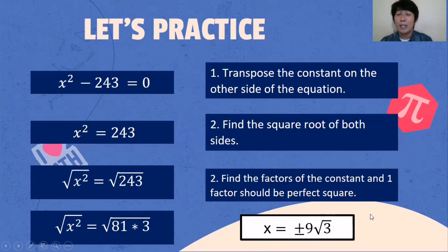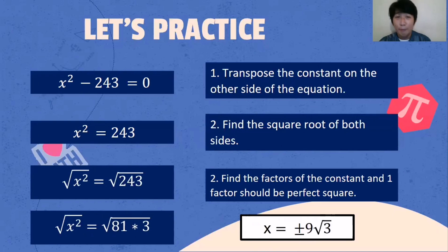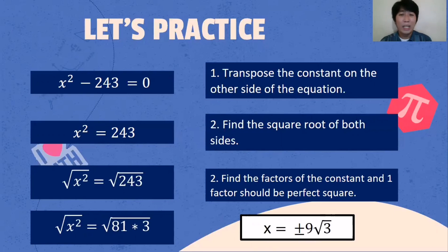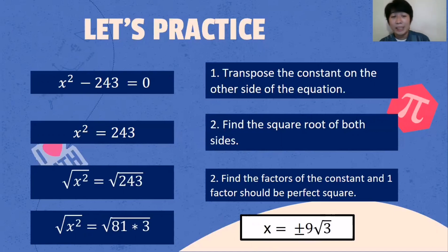Always remember that you can try to find two factors where one of the factors must be a perfect square. If there are no other factors except 1 and the number itself, we can't simplify further and must accept the answer as-is. But for this example, we have factors where one is a perfect square, so we simplify.